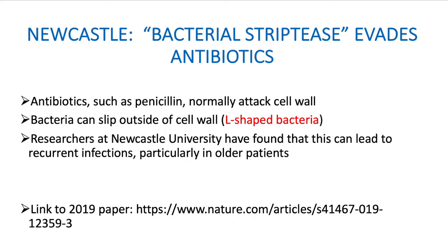Newcastle University is doing a lot of research into what they call L-shaped bacteria, and a video will illustrate how this works. They found that bacteria have certain mechanisms to defend themselves from invaders. Most antibiotics, like penicillin, work on the cell membrane and destroy it — it's assumed the bacteria die because they're more vulnerable without this protective layer. However, bacteria can slip out of the cell wall and survive within the cell itself. It's thought this mechanism explains recurrent infections, particularly in older patients with weaker immune systems, allowing bacteria to resist antibiotics.